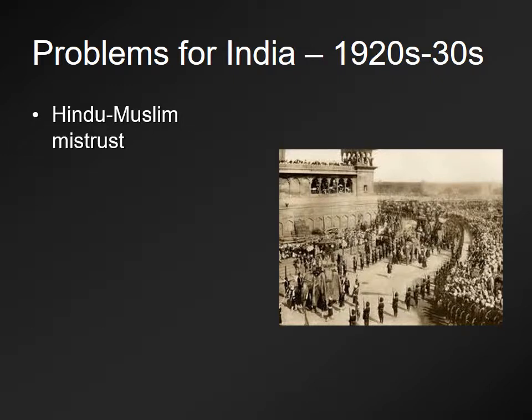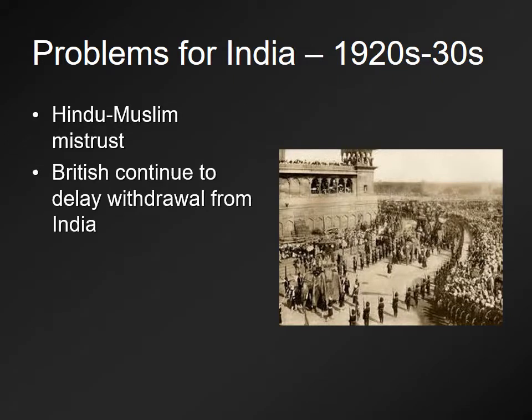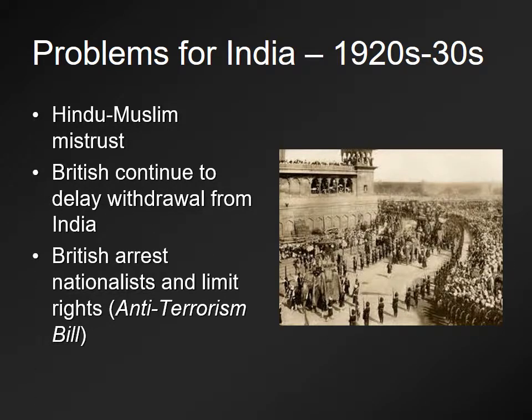Hindus and Muslims continued to deeply mistrust each other as they discussed independence. Muslims were nervous because they were a minority — large in number, but still a minority — and afraid their needs would be ignored in a Hindu-majority country. The British, using this tension between the two groups, argued they couldn't withdraw because, they claimed, who would keep the peace? But Indian nationalists didn't buy this and continued to push for freedom.